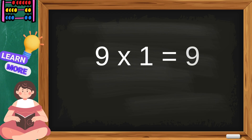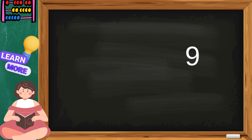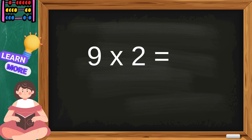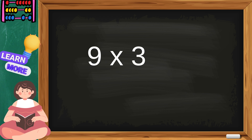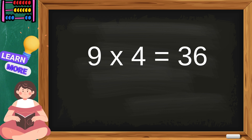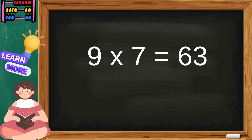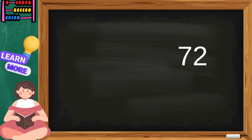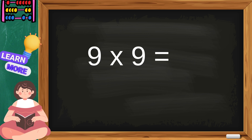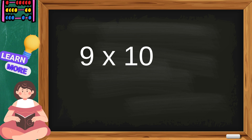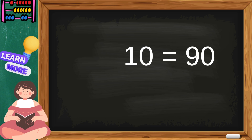Nine ones are nine, nine twos are eighteen, nine threes are twenty-seven, nine fours are thirty-six, nine fives are forty-five, nine sixes are fifty-four, nine sevens are sixty-three, nine eights are seventy-two, nine nines are eighty-one, nine tens are ninety.